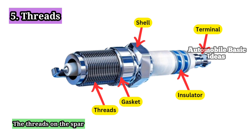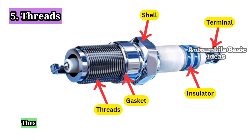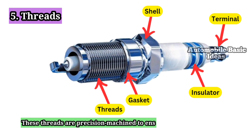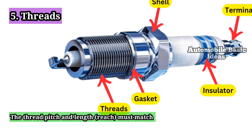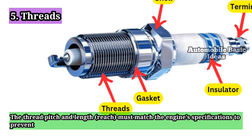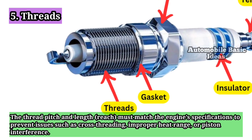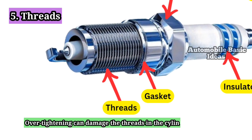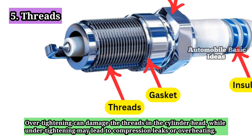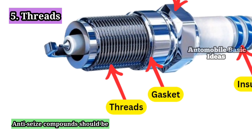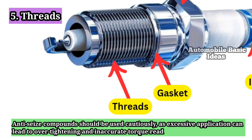5. Threads. The threads on the spark plug shell are used to secure the spark plug in the cylinder head. These threads are precision-machined to ensure a proper fit and heat dissipation. The thread pitch and length, or reach, must match the engine's specifications to prevent issues such as cross-threading, improper heat range, or piston interference. Over-tightening can damage the threads in the cylinder head, while under-tightening may lead to compression leaks or overheating. Anti-seize compounds should be used cautiously, as excessive application can lead to over-tightening and inaccurate torque readings.